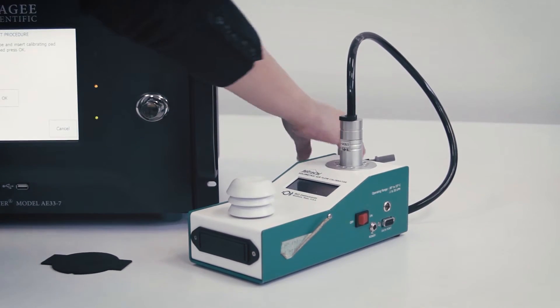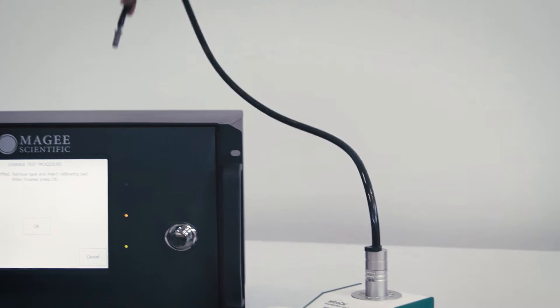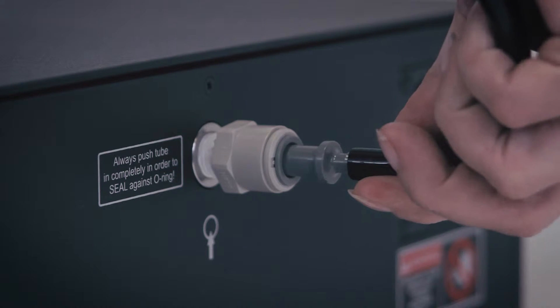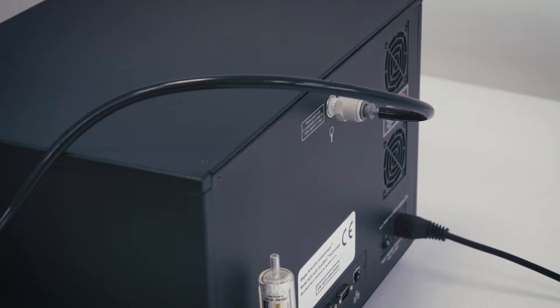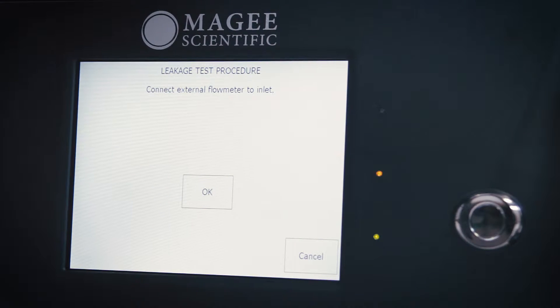Connect your external mass flow meter to the inlet port. Connect the flow meter using well-sealed tubing and fittings. Make sure that the hose connection is tight. Press OK.